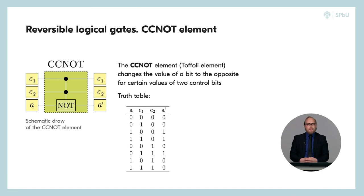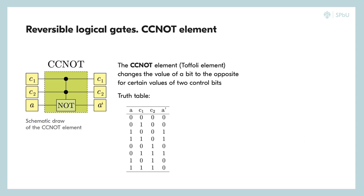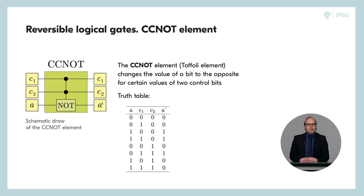Another important reversible element is the CCNOT element, or Toffoli element. This element has three bits at the input: two of them, C1 and C2, are control bits and do not change during the operation, while bit A is the target and changes depending on the values of C1 and C2. If both control bits C1 and C2 are simultaneously equal to 1, then the target bit A will change its value to the opposite; in other cases, none of the bits change their value. Interestingly, using the CCNOT element by choosing the values of C1, C2, and the target bit, you can obtain the AND, FANOUT, XOR, and NOT elements — making this element universal.